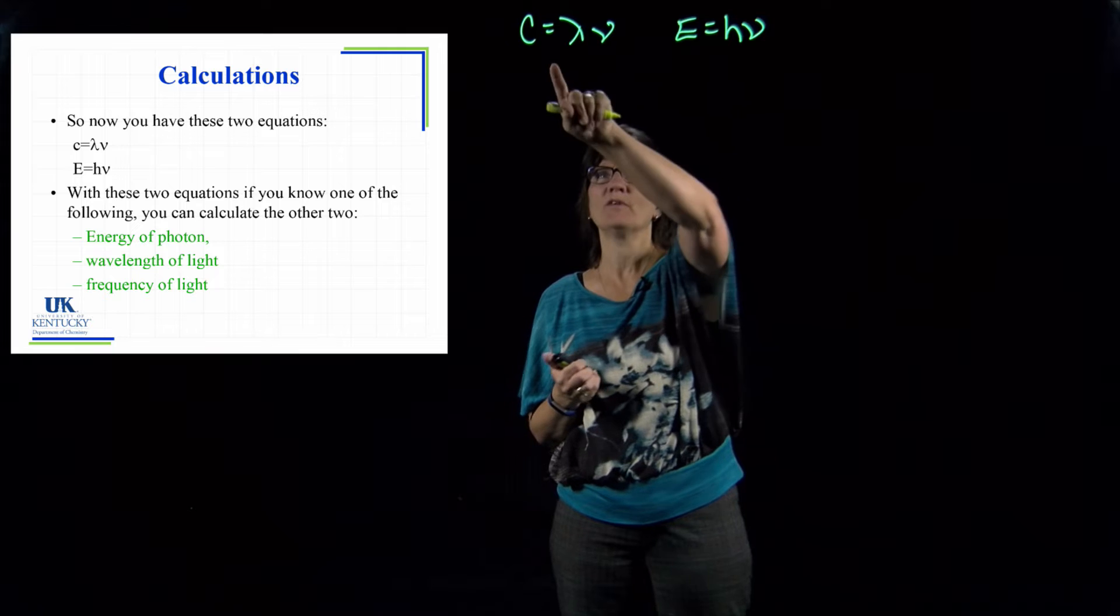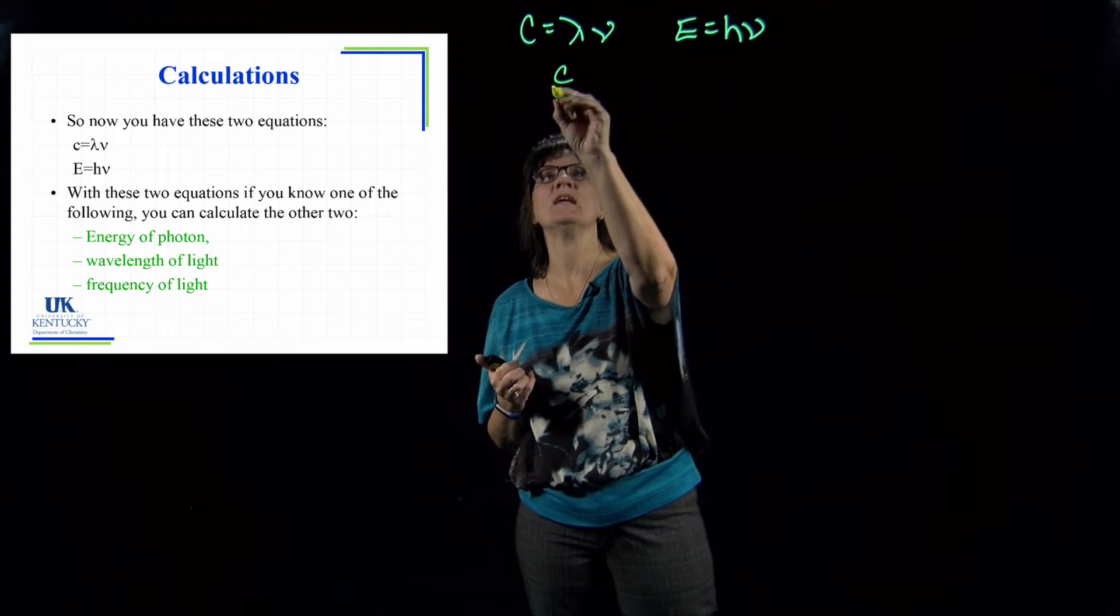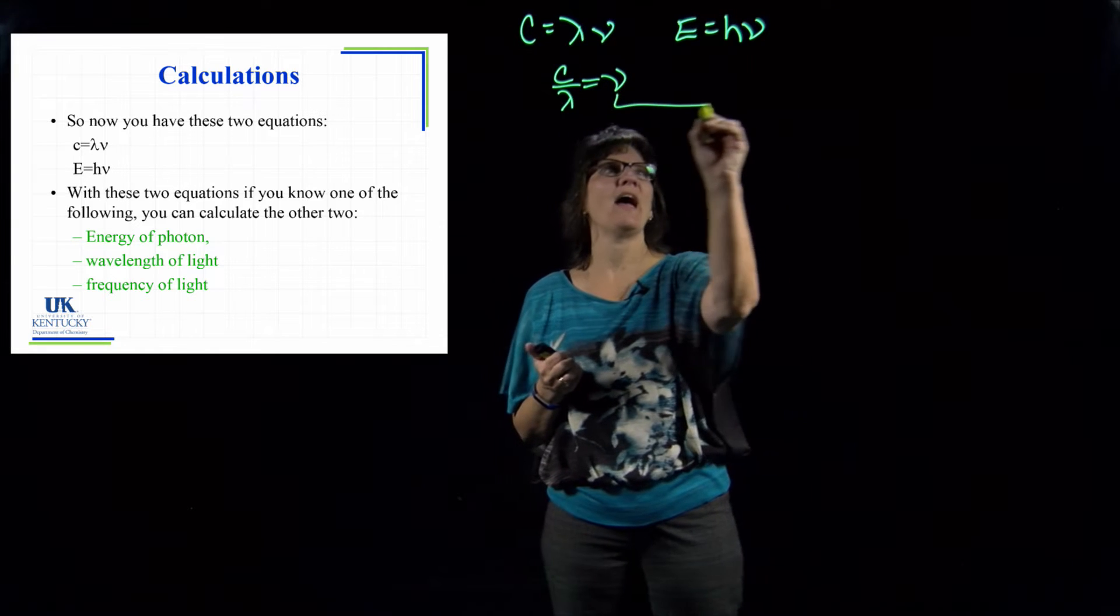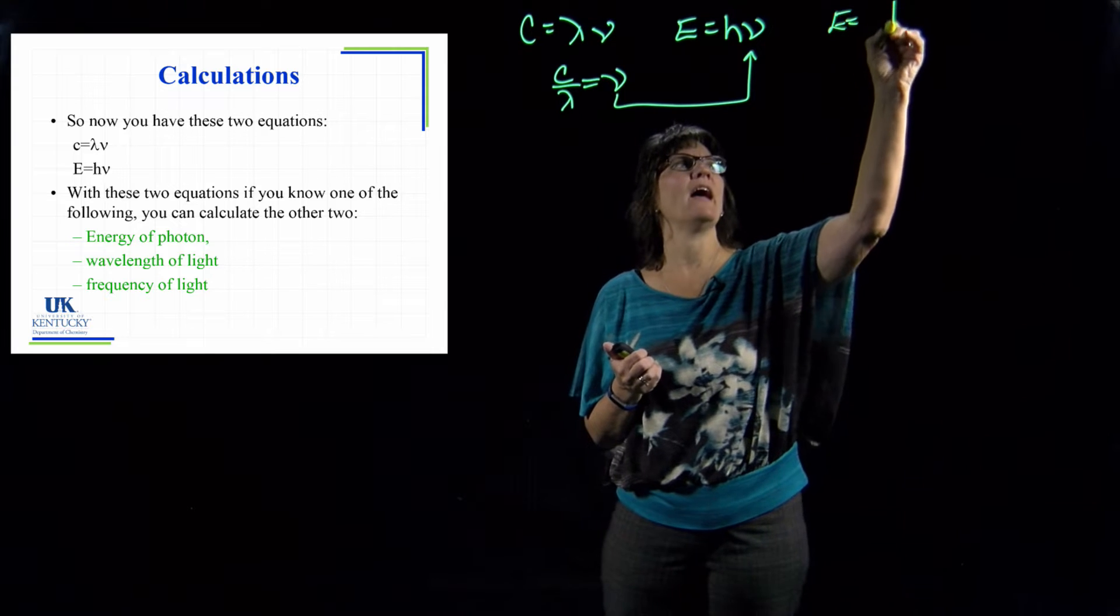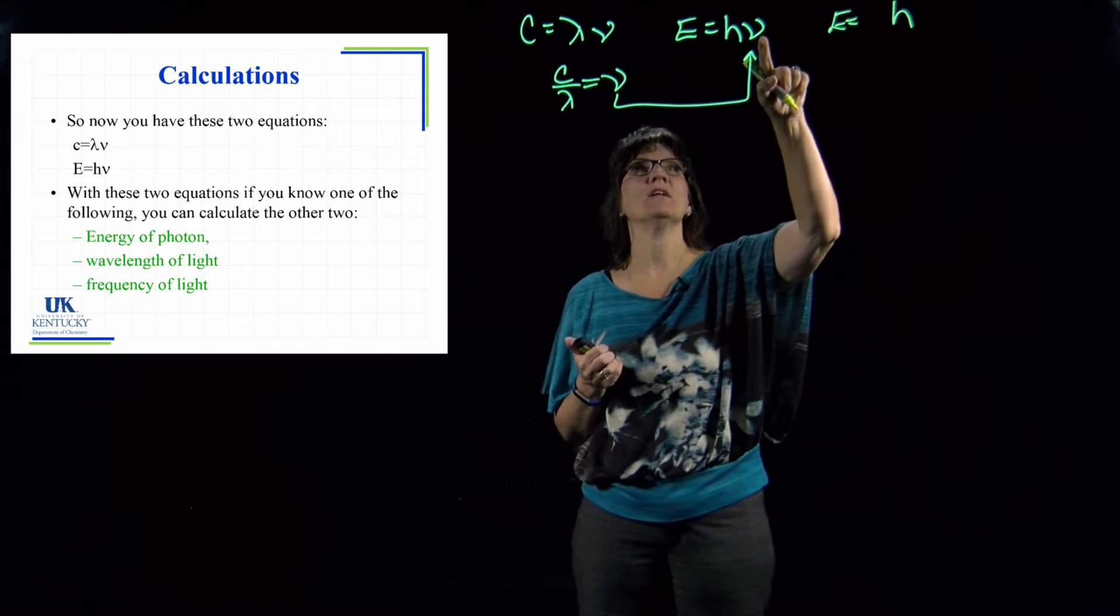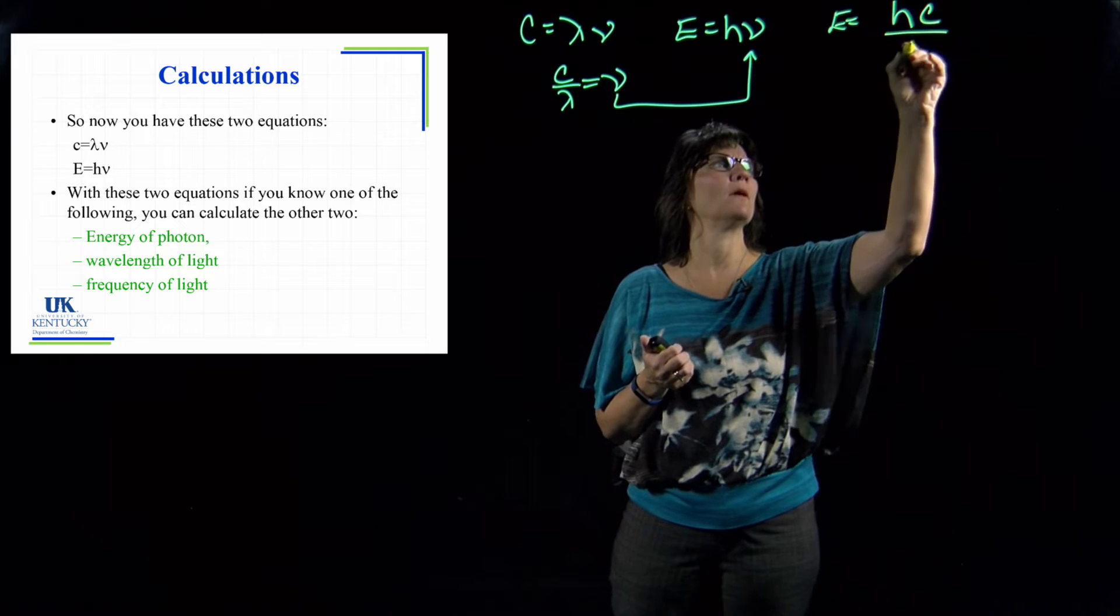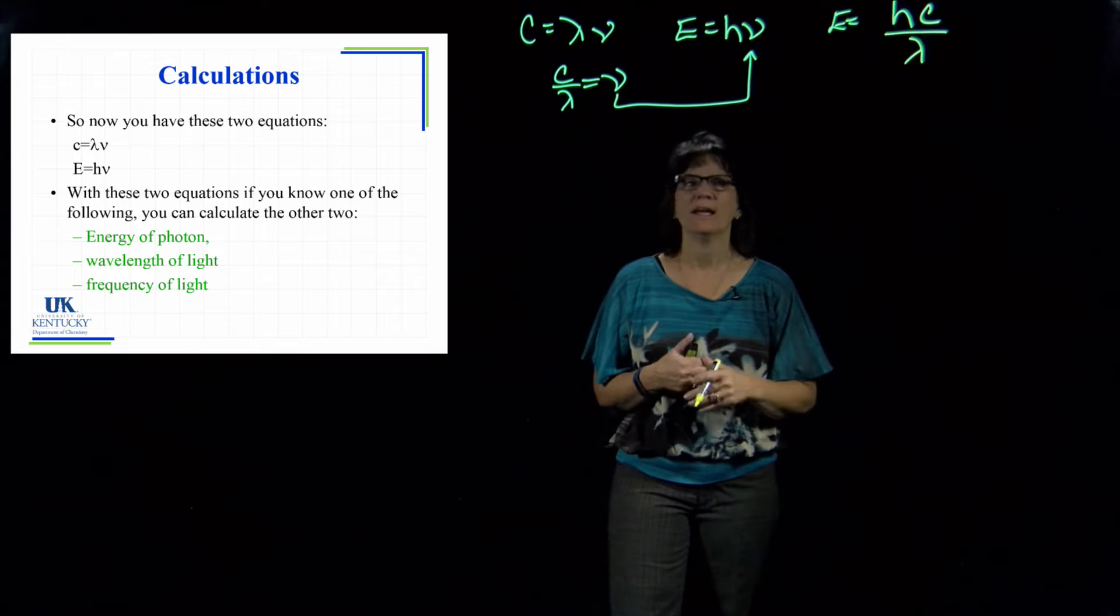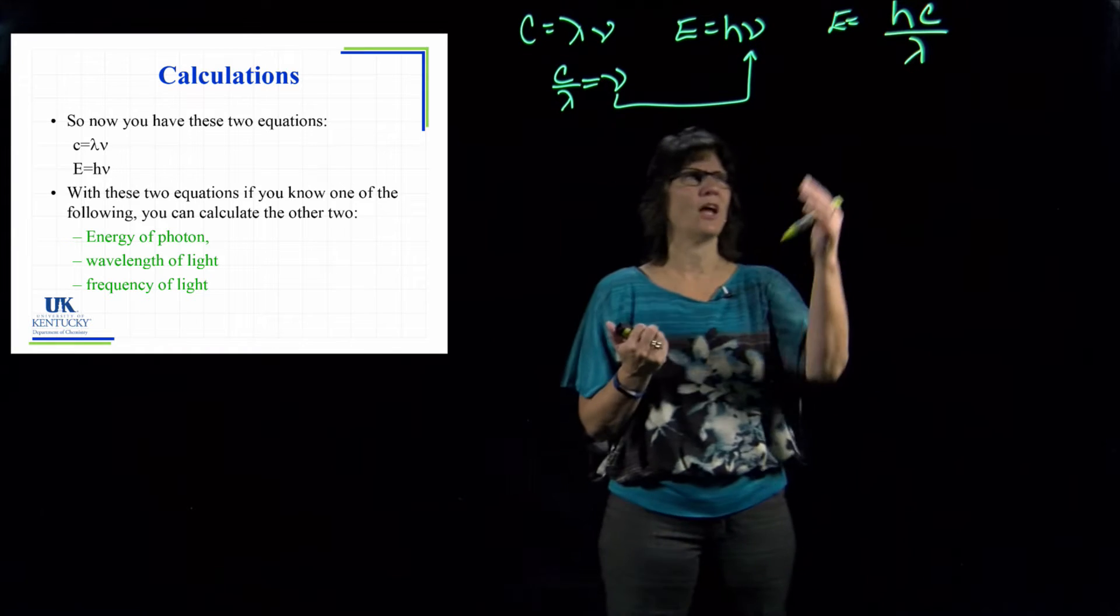If I took this equation here and solved for frequency—so that would be c over lambda equals frequency—and I stuck that into here, this is going to give me E equals h, and in place of the frequency I want to put c over lambda.